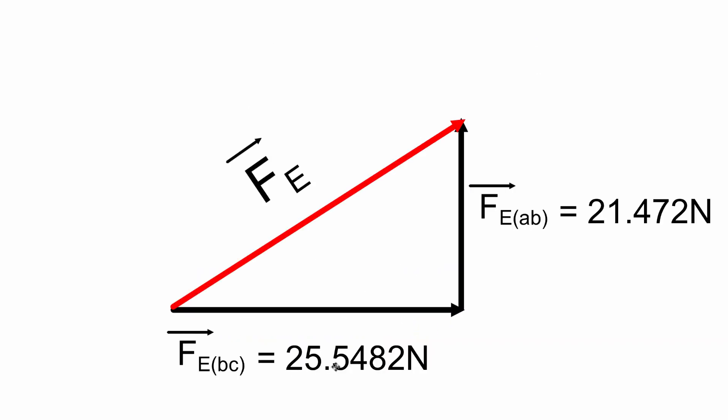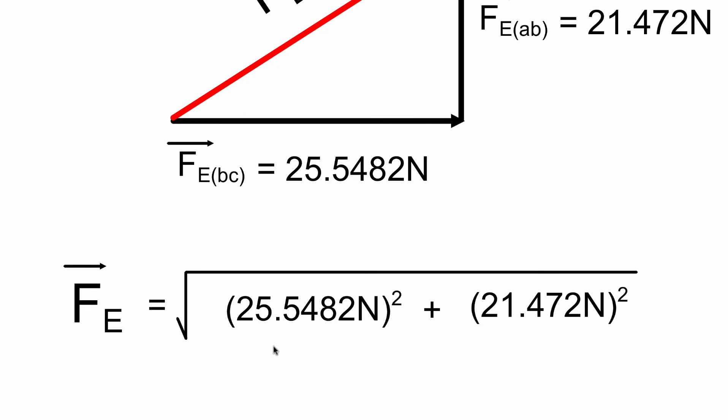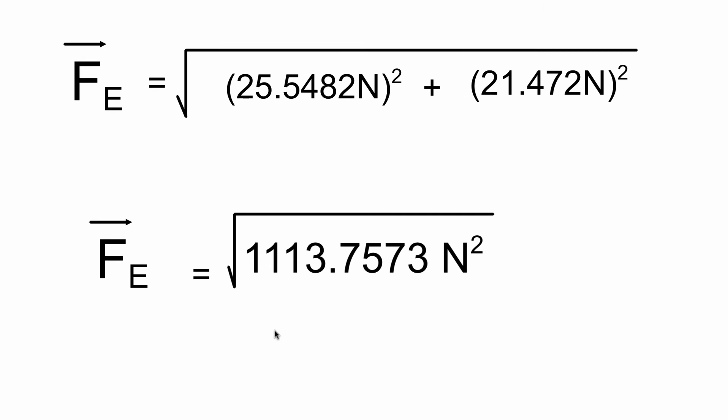We had 25.5482 newtons going towards the right, a force of 21.472 newtons going upwards. It's a right angle triangle. This is my x component, this is my y component. We're going to be using the Pythagorean theorem. 25.5482 newtons squared plus 21.472 newtons squared, take the square root.